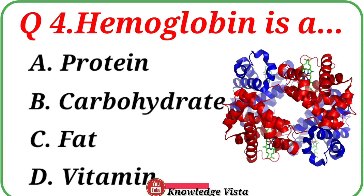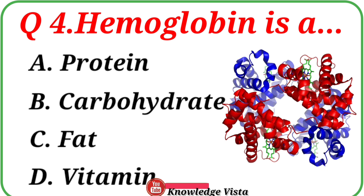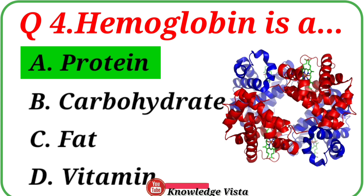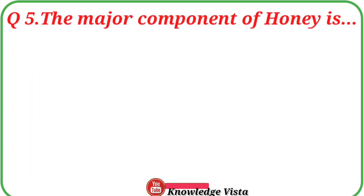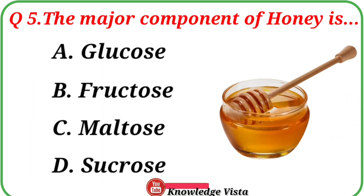Question number four: Hemoglobin is a? Option A: Protein, B: Carbohydrate, C: Fat, D: Vitamin. Correct answer is option A: Protein. Question number five: The major component of honey is? Option A: Glucose, B: Fructose, C: Maltose, D: Sucrose.